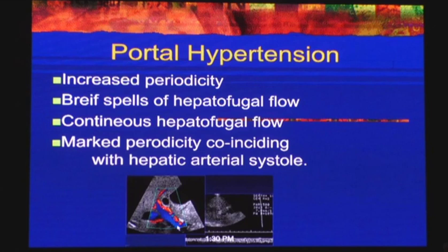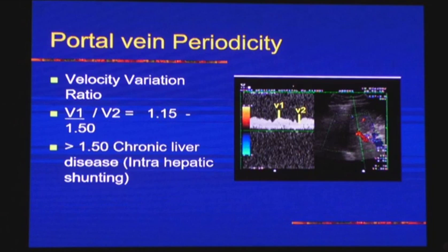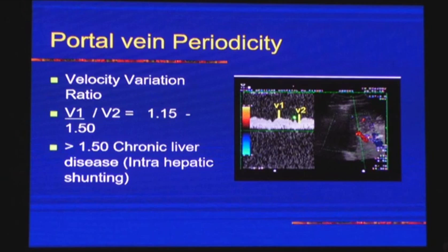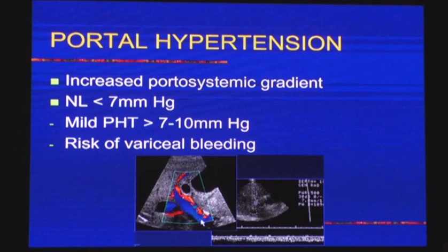In portal hypertension, there is increased periodicity, brief spells of hepatofugal flow, continuous hepatofugal flow, and marked periodicity coinciding with hepatic arterial systole. The dipping in the portal vein waveform is markedly increased. A velocity variation ratio is used: the upper peak of portal vein is taken as V1 and the lower dip as V2, and their ratio is measured. In mild portal hypertension, this is in the range of 7 to 10.